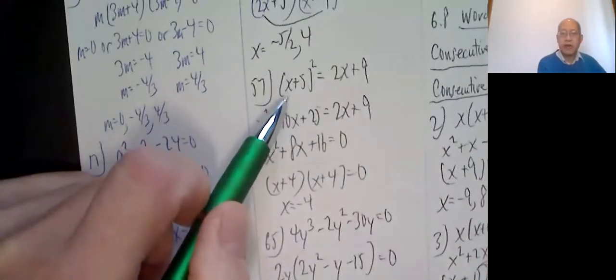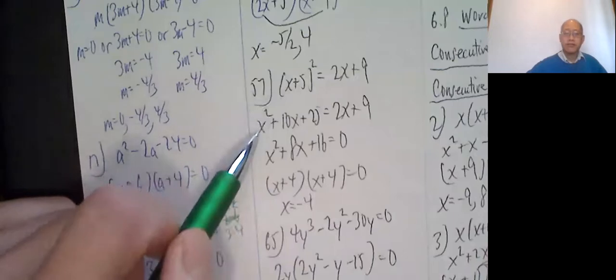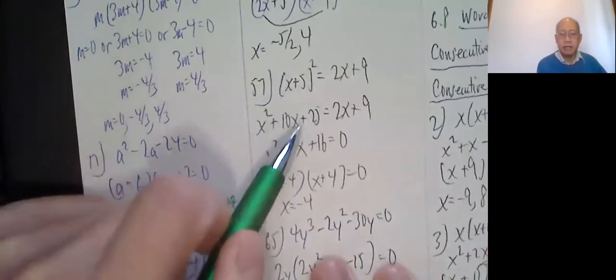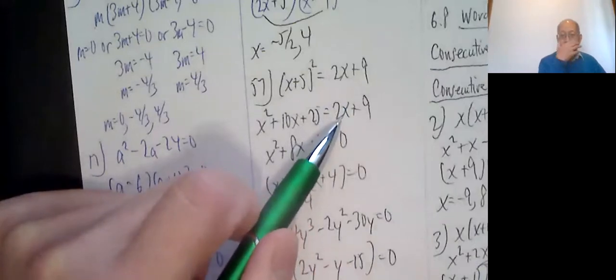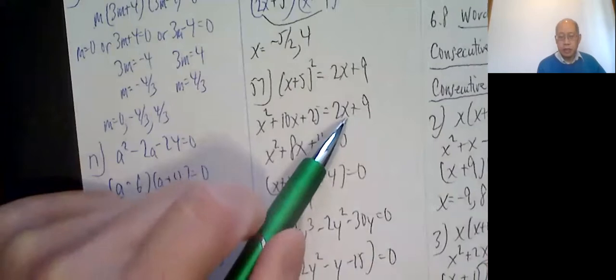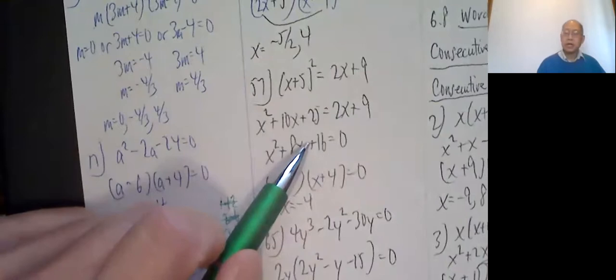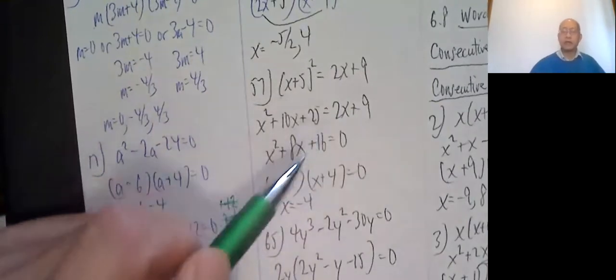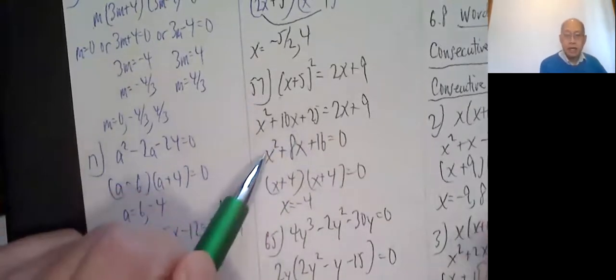Number 57: x plus 5 squared. First let's multiply that out. By formula, x squared plus 10x plus 25, and then all this stuff. Subtract the 2x, subtract the 9, so that this becomes a 0. If I subtract 2x it looks like that, subtract 9 looks like that. If it looks like I'm not writing every step, you're right. I'm supposed to wean you off of writing every single step, get you to the point where you can lose steps.